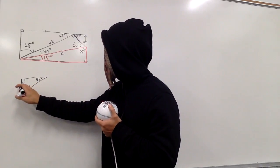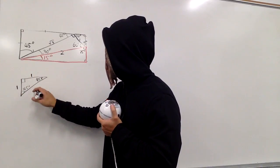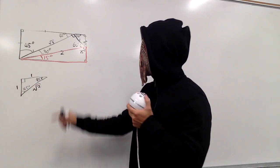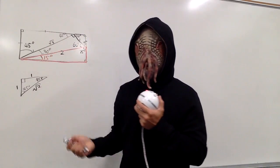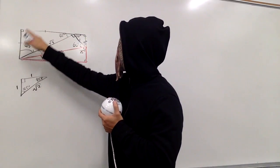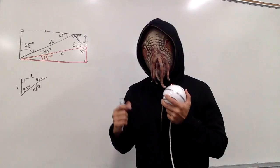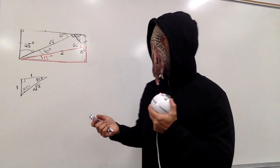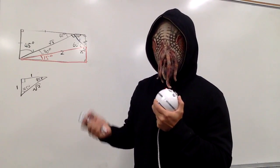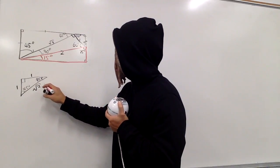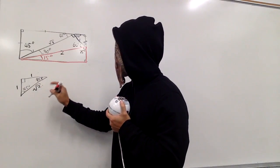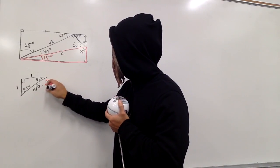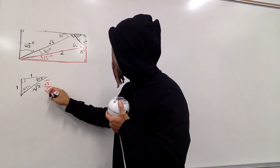And now, this side is square root of 3. How can I figure the other two out? You can use the Pythagorean theorem, but the easiest way is to multiply the 45-45-90 triangle by square root of 3 over square root of 2.